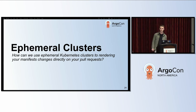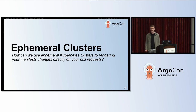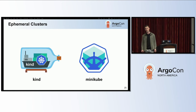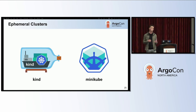But enough about me. Let's talk about how we can use an ephemeral Kubernetes cluster to render our manifest changes directly on our pull requests. In other words, how can we use a tool like Kind or MiniKube to figure out what has changed between two branches, without accessing your live infrastructure and rendering the whole process locally instead?